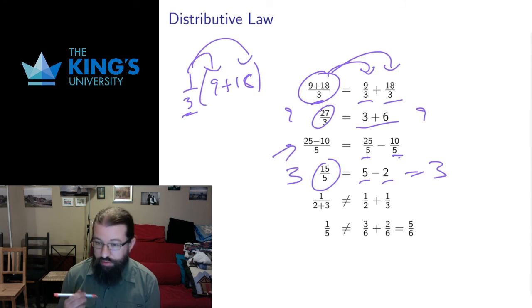And it's important to note that this is splitting up numerators but not denominators. This doesn't work. If you wanted to test it, look at this possible equality here at the bottom. We have 1 over 2 plus 3.